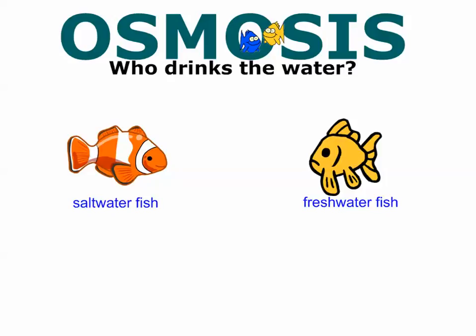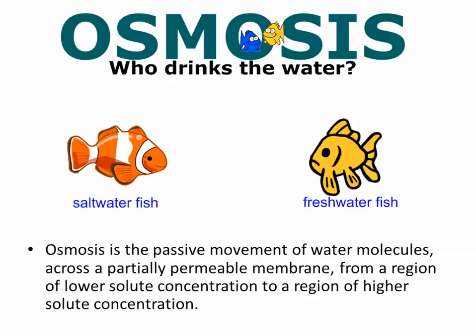Osmosis — the definition can be confusing. You've memorized diffusion as the movement of particles from an area of high concentration to an area of low concentration; you spray perfume in the corner and the molecules spread out. Osmosis is similar — it's the movement of free water molecules. The easy way to think about it: water tends to move to places that are more salty.